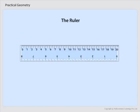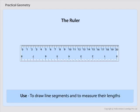The ruler or straight edge. A ruler ideally has no markings on it. However, the ruler in your instrument box is graduated into centimeters along one edge and sometimes into inches along the other edge. It is used to draw line segments and to measure their lengths.